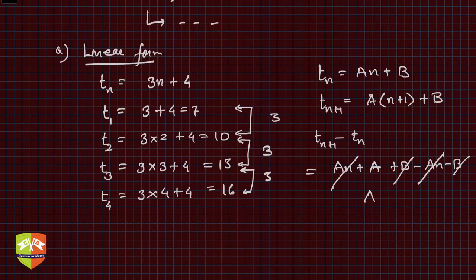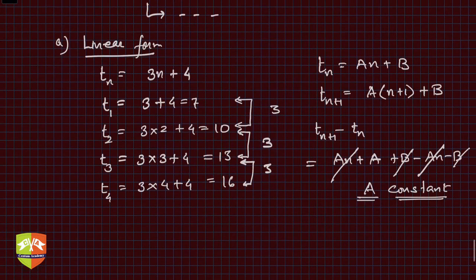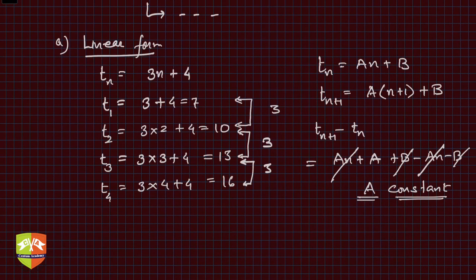The an and b cancel out, leaving just a. So a is a constant independent of n. Always the difference between two consecutive terms will be a constant. That is the learning in case of linear form.